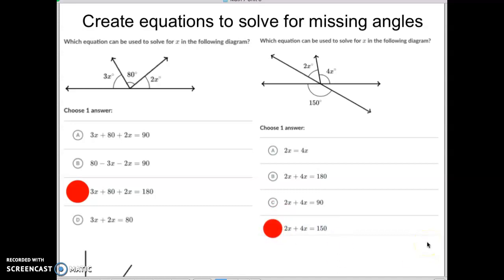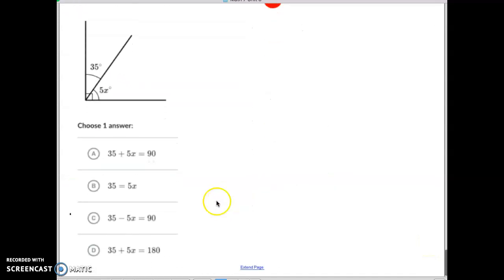So not that difficult. Pretty simple. Let's do one more. This one looks like what kind of angle? Anybody? Anybody? Complementary. Very good. So we want one that adds 35 plus 5x equals 90.